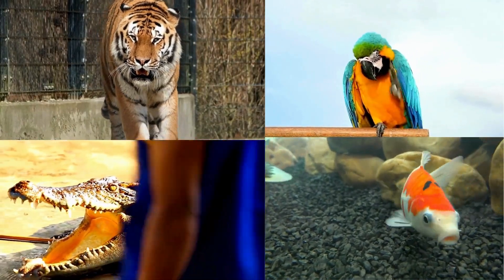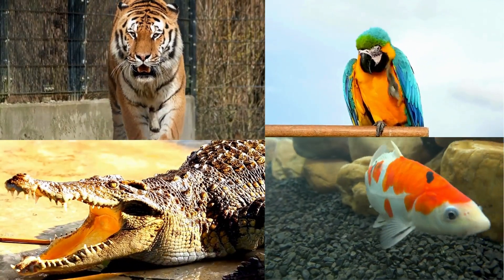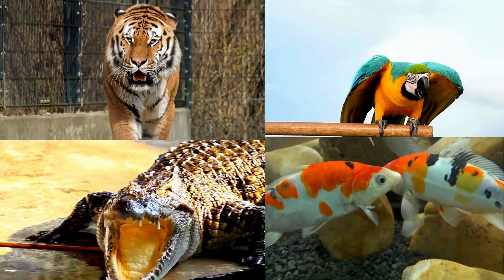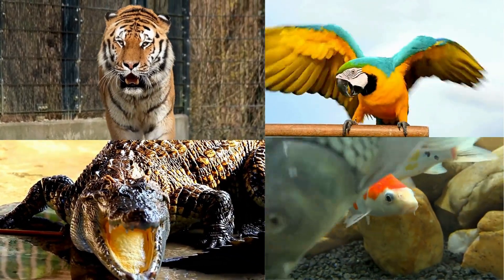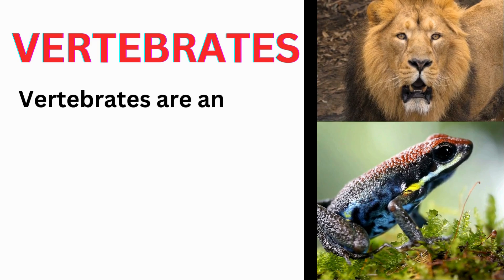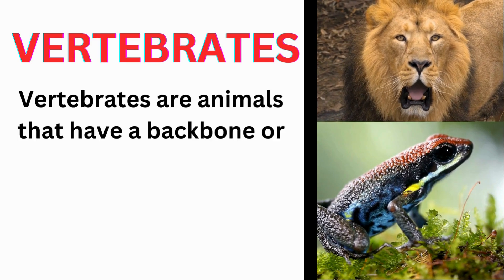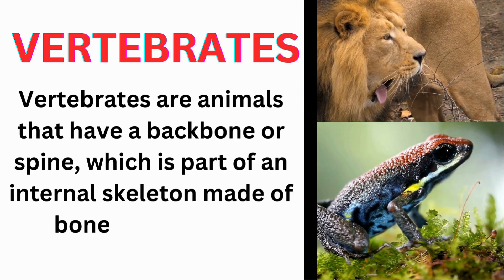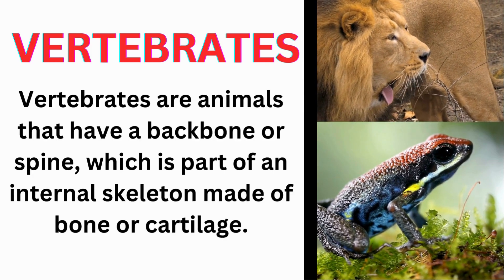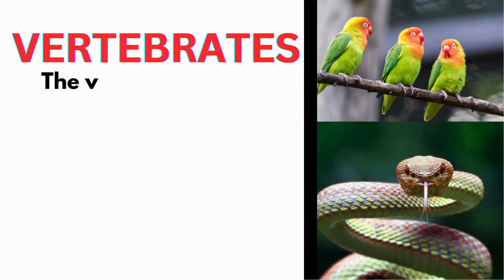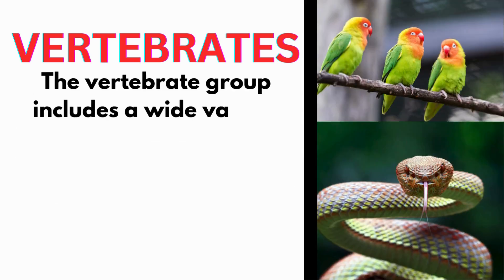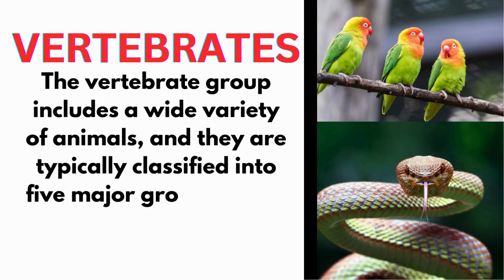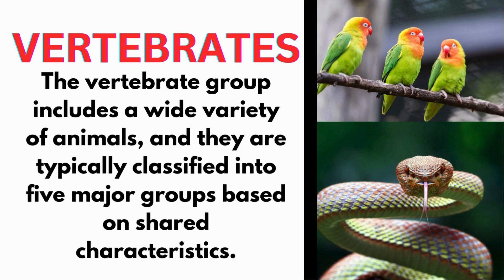Vertebrates are animals that have a backbone or spinal column, which is part of an internal skeleton made of bone or cartilage. They belong to the subphylum Vertebrata, and are typically classified into five major groups based on shared characteristics.